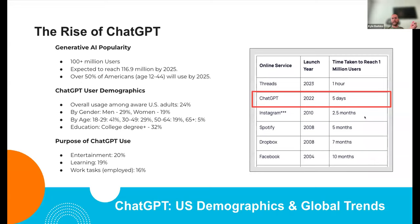Let's put out a quick poll: how many of you have used ChatGPT in the past month? You can see how quickly ChatGPT was adopted. They reached over 100 million users in just under five days. Compare that to Facebook, which took 10 months, and Instagram, which took two and a half months. That rapid adoption really showcases how much of an unmet need there was in this space.